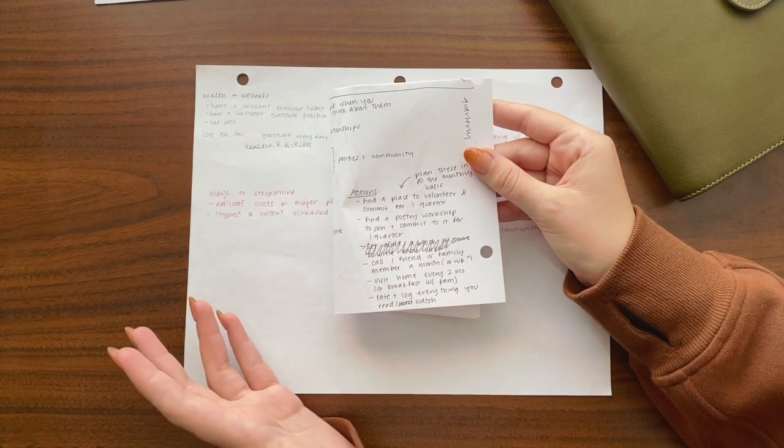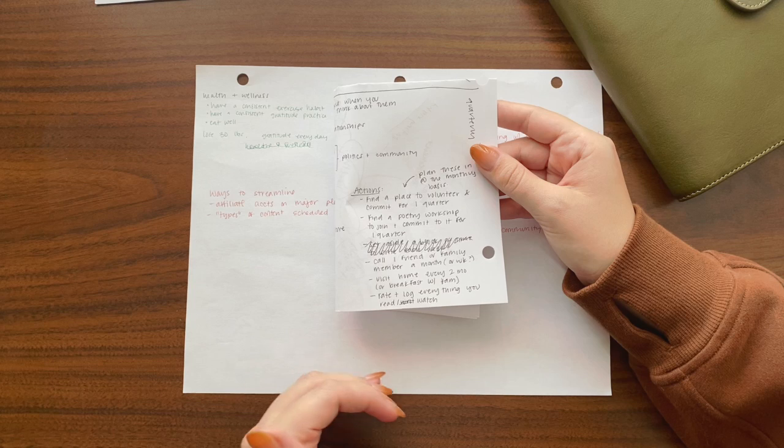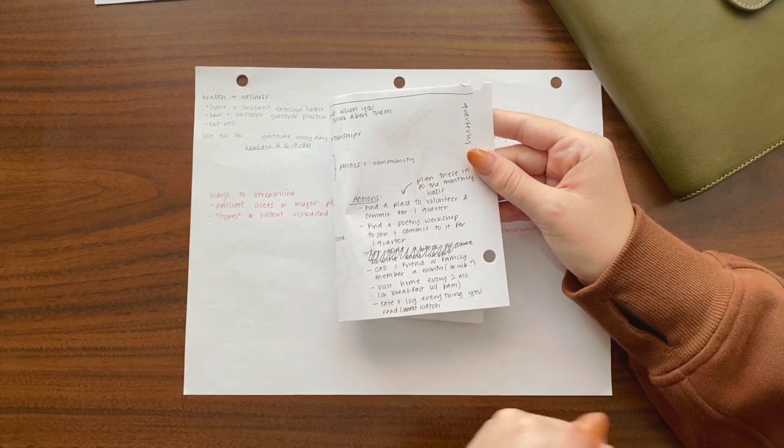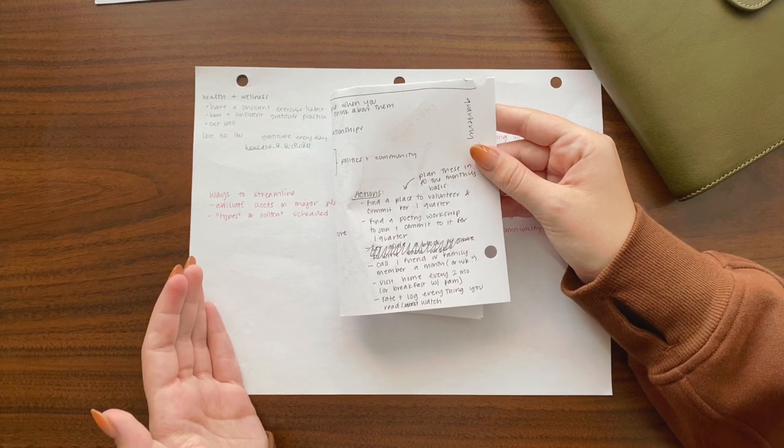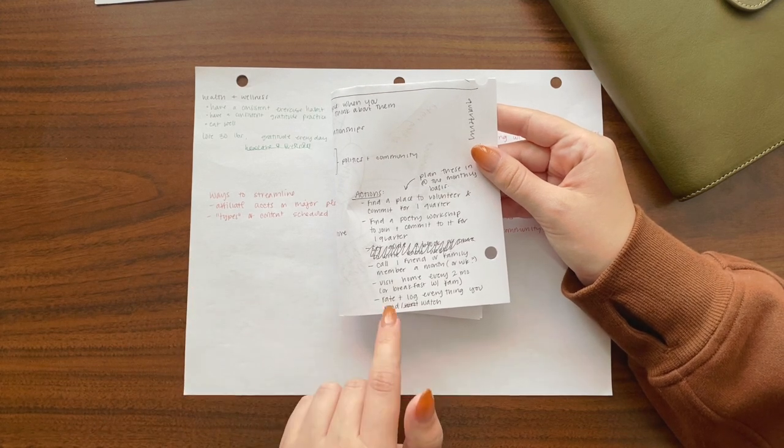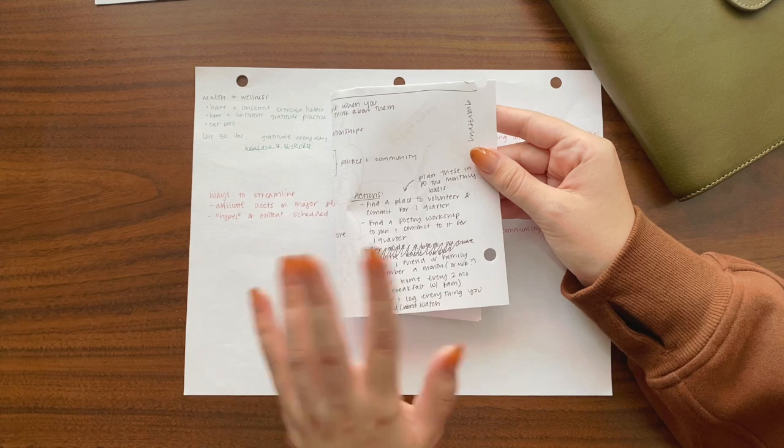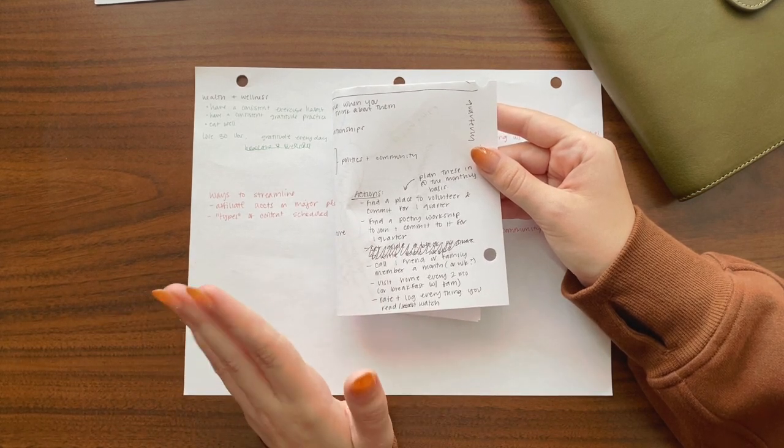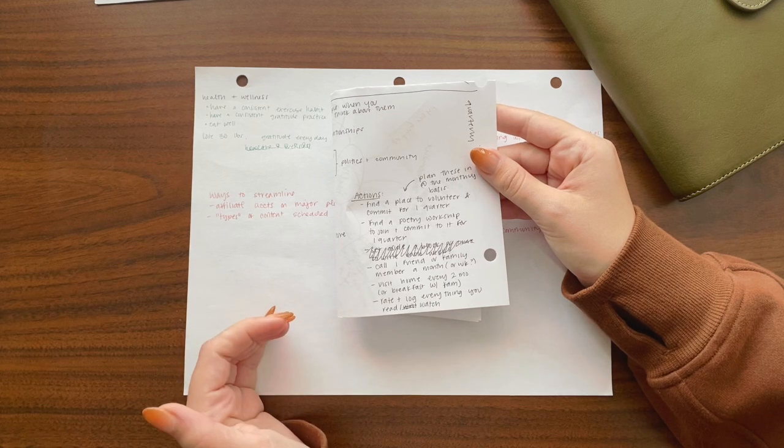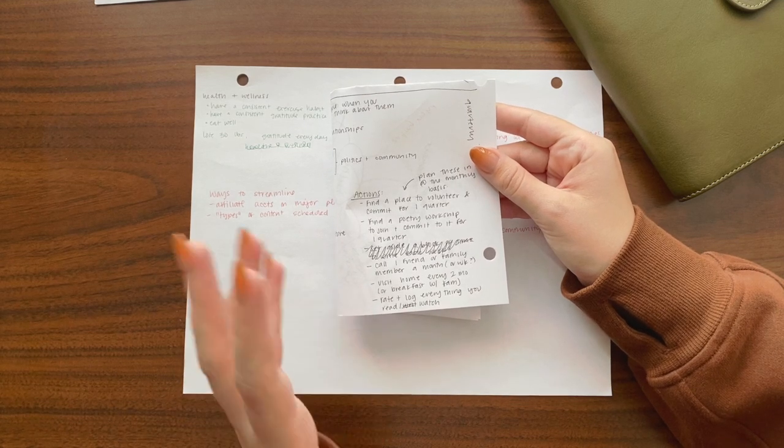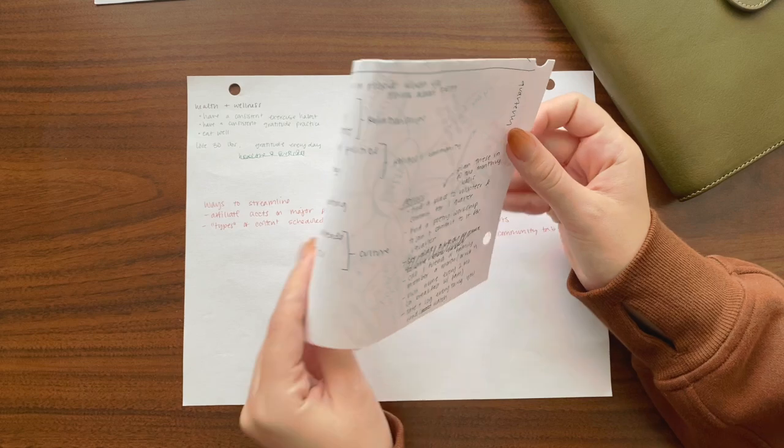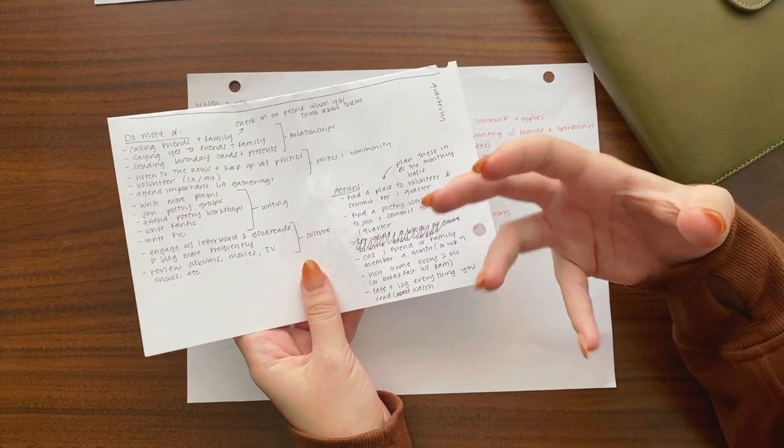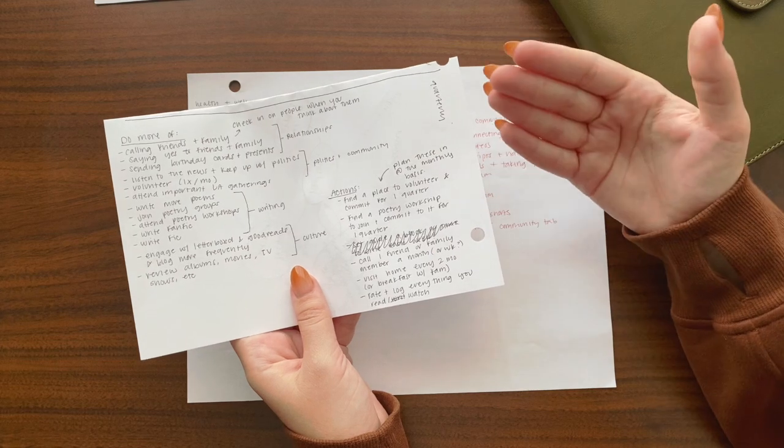So I created this actions list. For example, find a place to volunteer and commit to it for a quarter. If I tell someone I'm going to go volunteer at this place, I'll meet you there, then I will go. I simply will go because I'm accountable to another human being. If I want to visit home every two months or get breakfast with my family, I live about two hours away. We always like to meet in the middle for breakfast. If I want to do that every two months, I tell them we're going to do it and then I'm accountable to them.